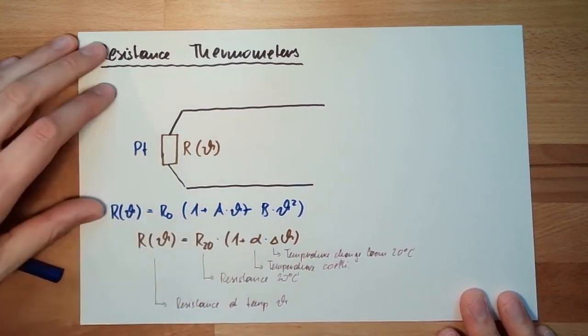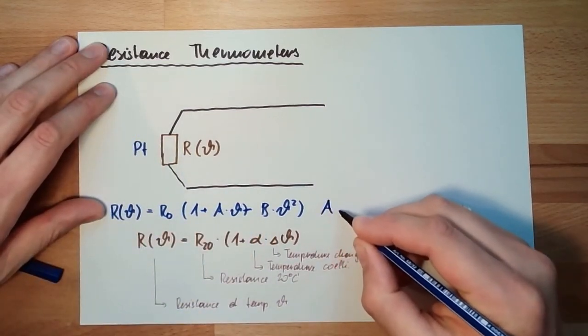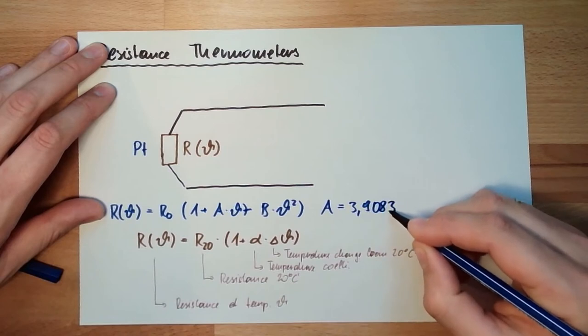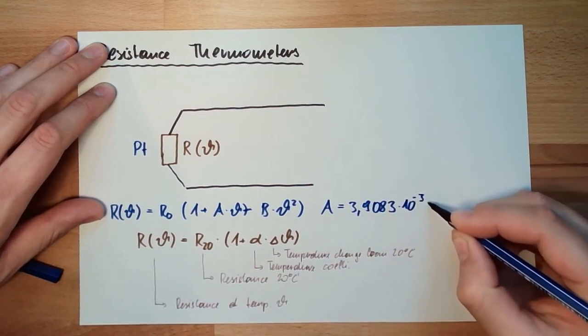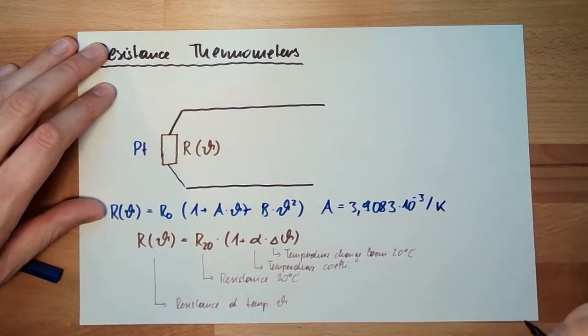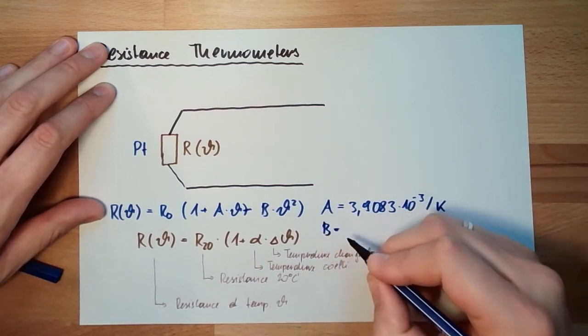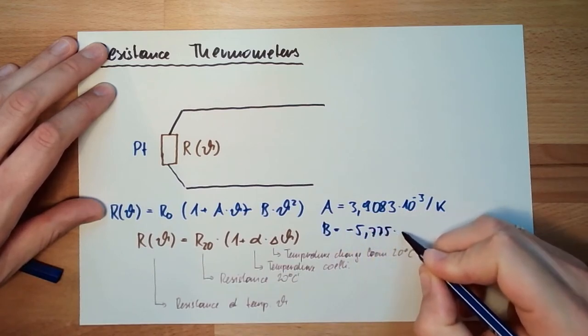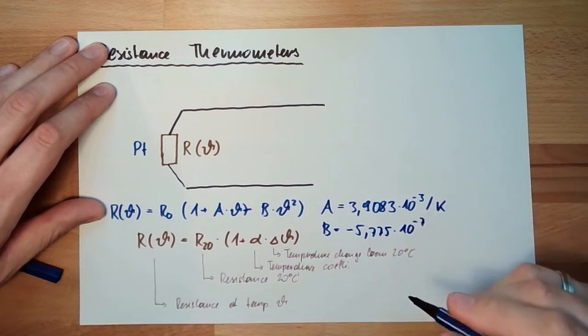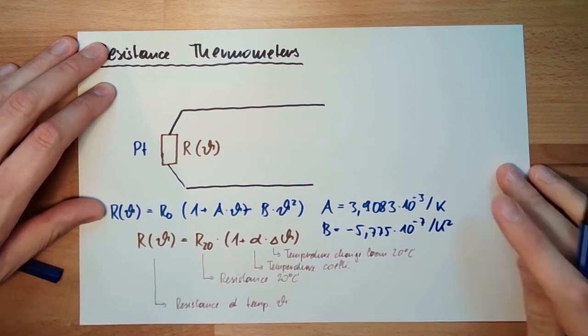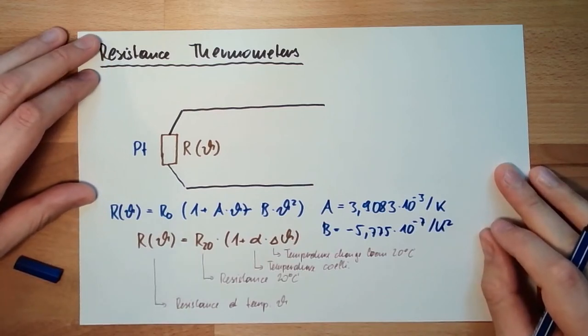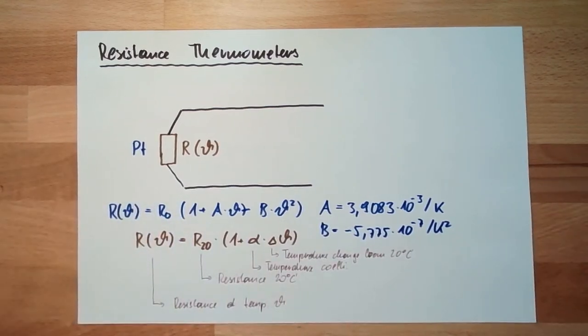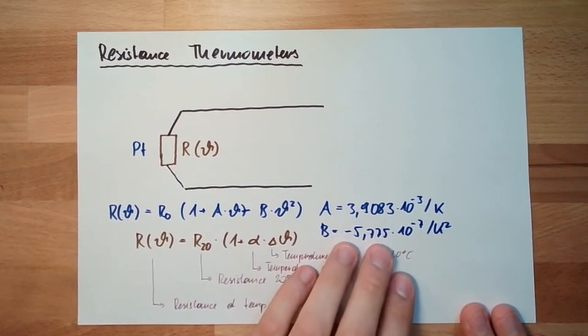And for platinum, this A is 3.9083×10⁻³ per Kelvin, and B equals minus 5.775×10⁻⁷ per Kelvin squared. These are the coefficients. This is for platinum good enough in a wide, wide area.